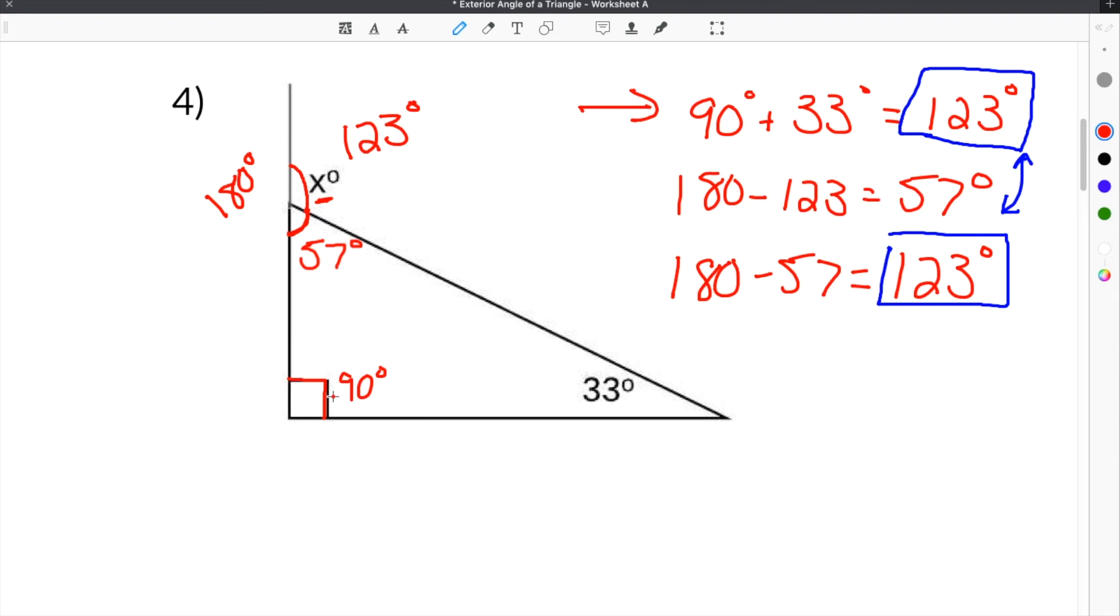So if you ever get a problem like this again, and you have non-adjacent angles to the exterior angle, you just add them up. And whatever they add up to is the angle measure of the exterior angle.